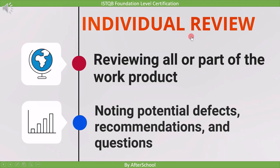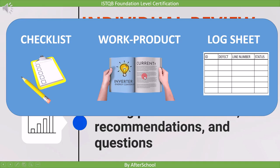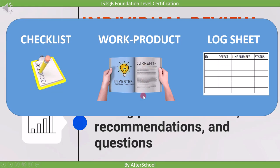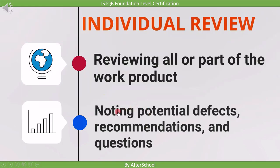In individual review, each team member reviews all or part of the work product. A checklist contains questions that the reviewer checks the work product against — if the work product violates a checklist item, the defect is logged in the log sheet. For example, a checklist question might be 'Are all words spelled correctly?' If the reviewer finds a wrong spelling, it is logged as a defect. In addition to defects, reviewers can also note recommendations and questions in the log sheet.